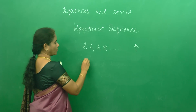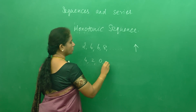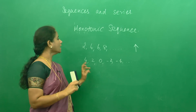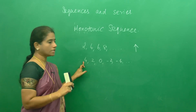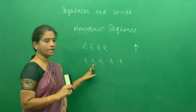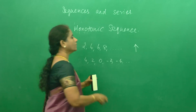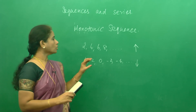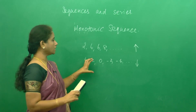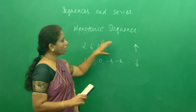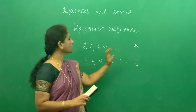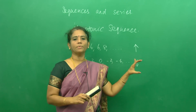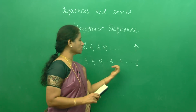In the same way, suppose I have a sequence 4, 2, 0, -2, -4, etc. This is again a monotonic sequence, but the second term is smaller than the first term and the third term is smaller than the second term. So each term goes on decreasing. When the terms go on decreasing, it is called a monotonic decreasing sequence. By common sense, monotonic increasing sequences will be divergent, and monotonic decreasing sequences will be converging sequences.